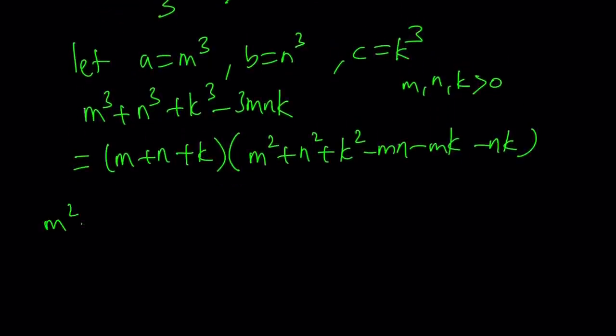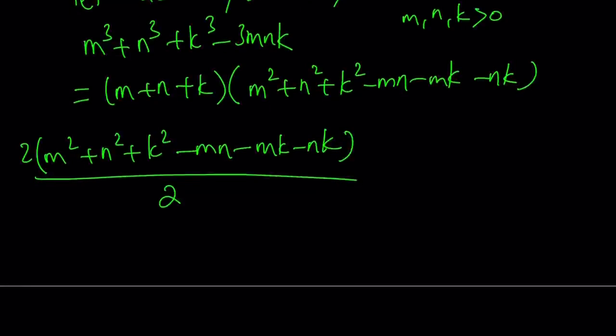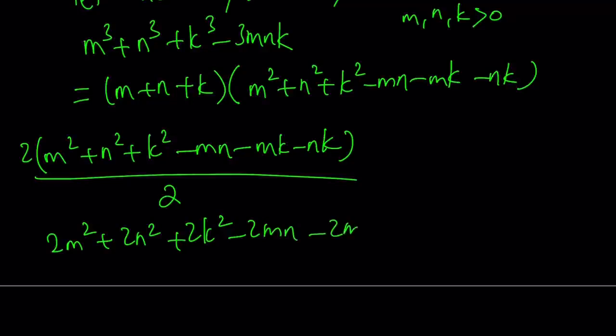Now, what can we do with this type of expression? I have the sum of squares minus the two-way products. This can be written in a really interesting way. I'm going to multiply this by 2 and divide by 2. So the numerator is going to give me 2m squared plus 2n squared plus 2k squared minus 2mn minus 2mk minus 2nk, and I'm going to divide that by 2 to balance out the equation.